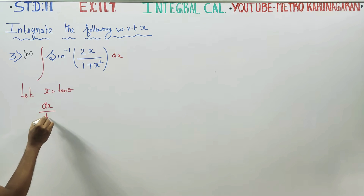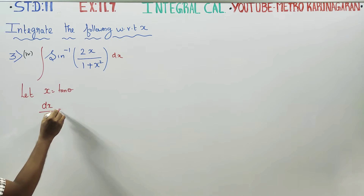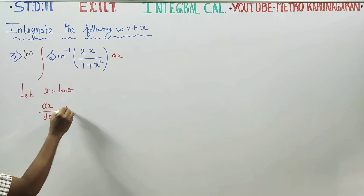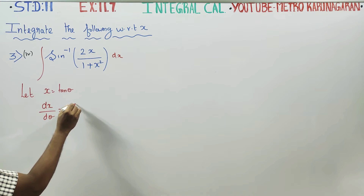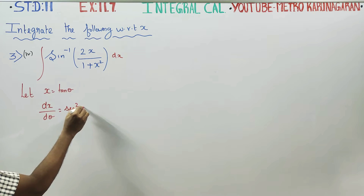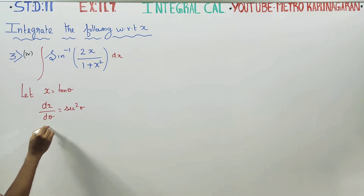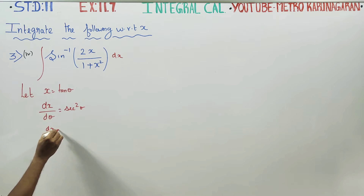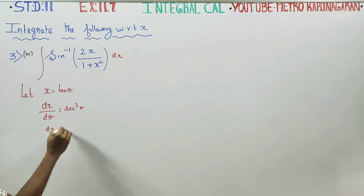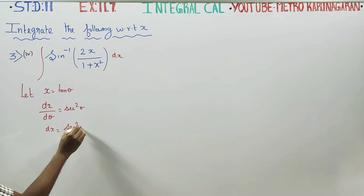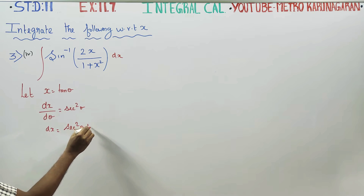Now differentiate: dx by d theta is equal to differentiate tan theta, you get secant square theta. So dx is equal to, cross multiplying, secant square theta d theta.